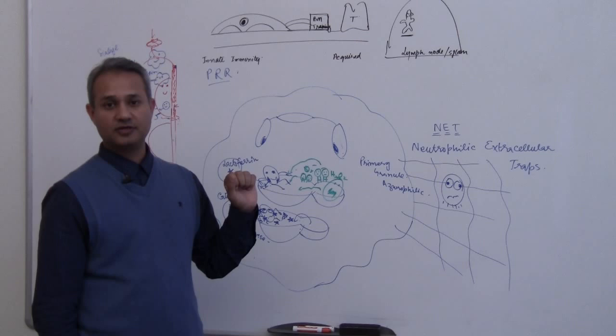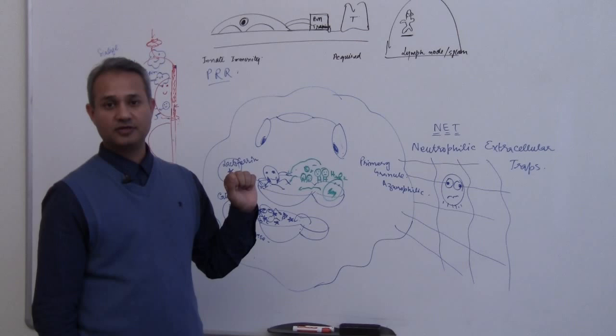So three mechanisms: oxygen dependent, reactive oxygen species and bleach; oxygen independent, where digestive enzymes work; and nets where we trap the bacteria and chelate.